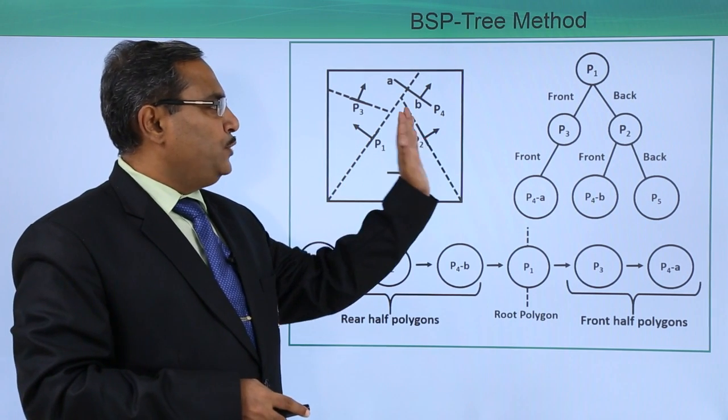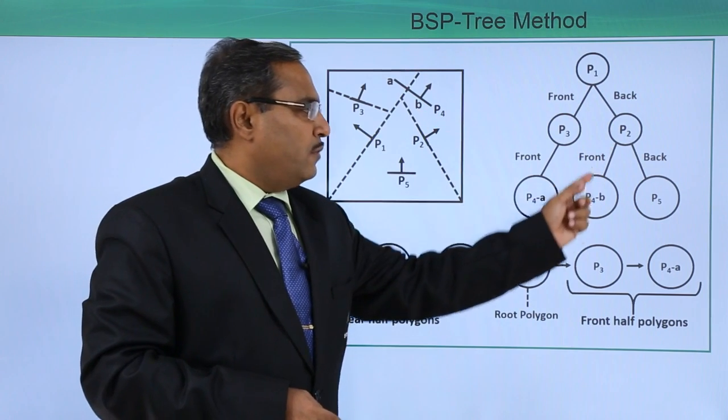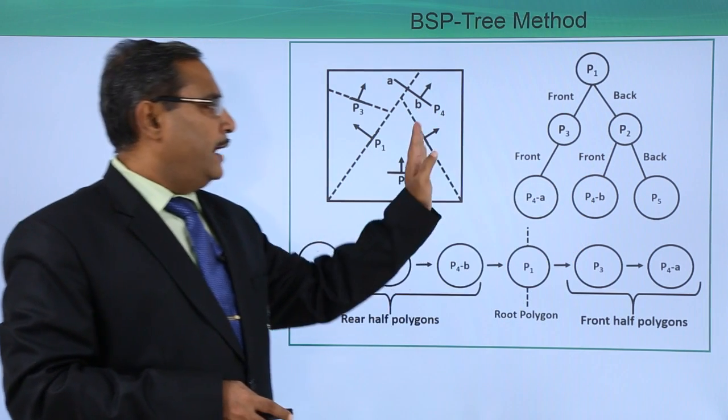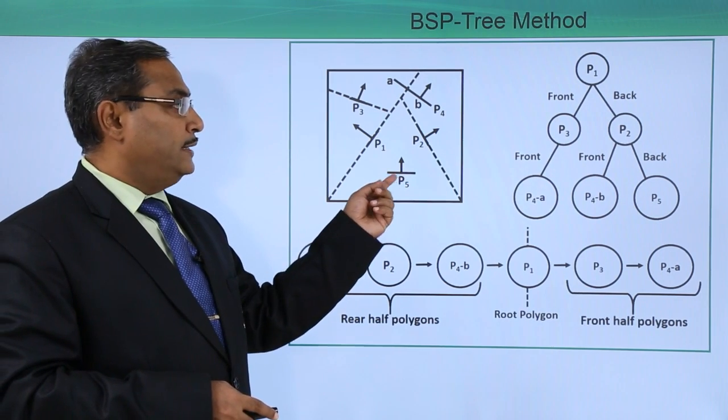Next, if we consider P2, then in the front we are getting P4b, and in the back we are getting P5 polygon. This is the normal here.